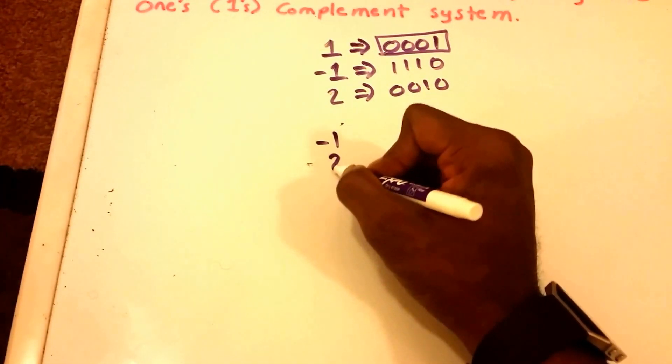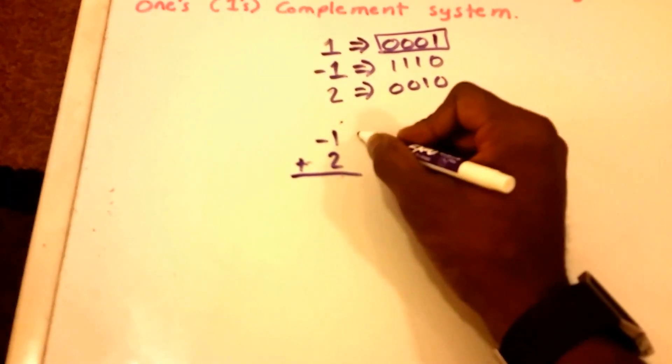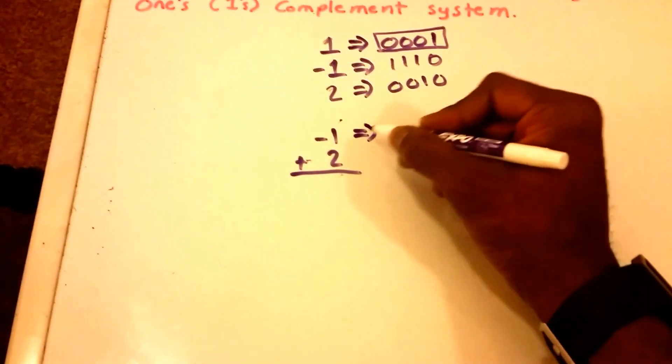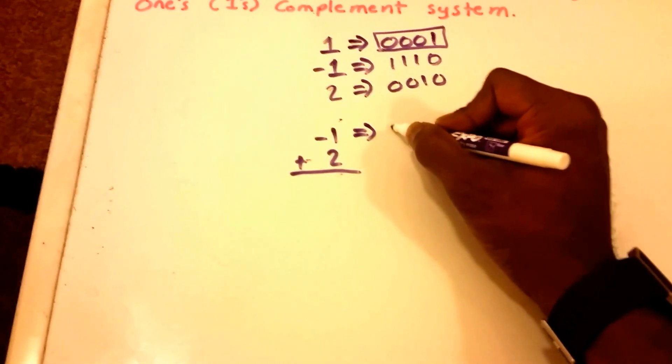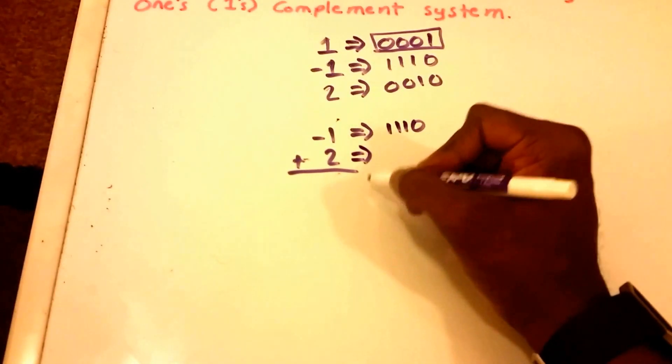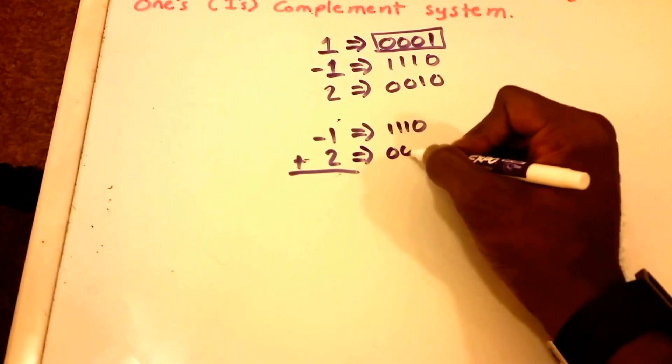So let's add them, negative one and two. Let's convert this to its binary equivalent which is 1110 and then convert this to its binary equivalent which is 0010.